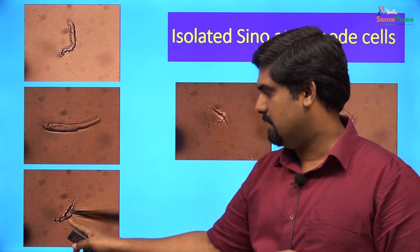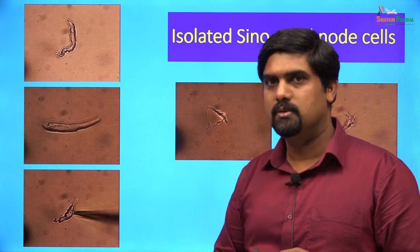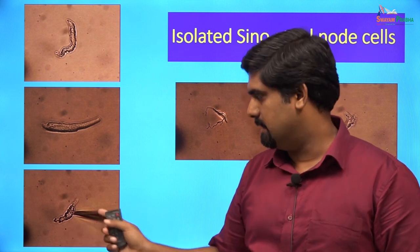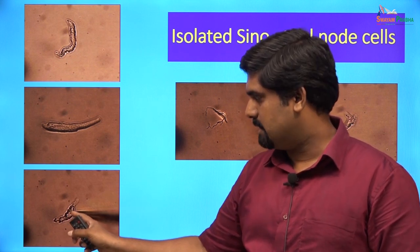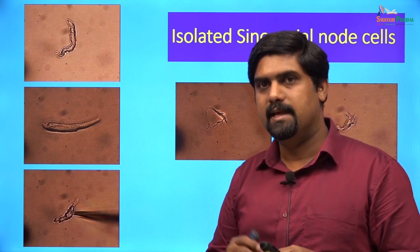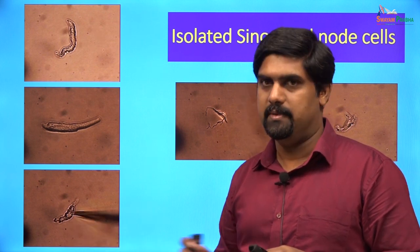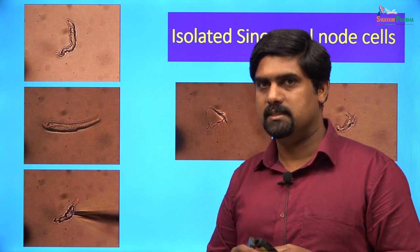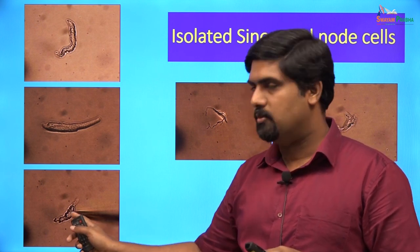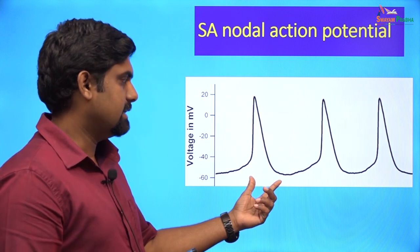This mouse SA nodal cell is spontaneously beating and was subjected to the patch clamp technique with a glass microelectrode. The cell membrane was sucked into the electrode and a sharp suction was applied to break open the cell membrane. A technique called current clamp was then used to measure the action potentials generated by this cell.